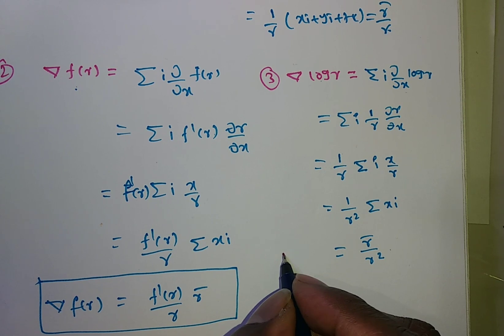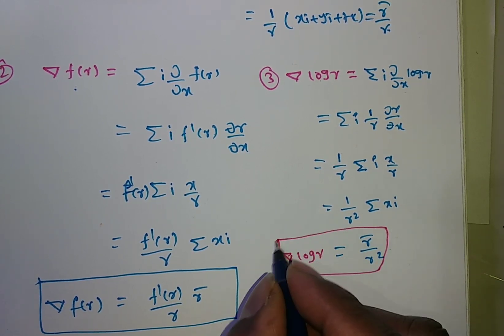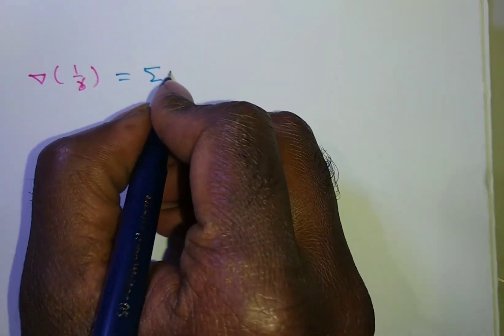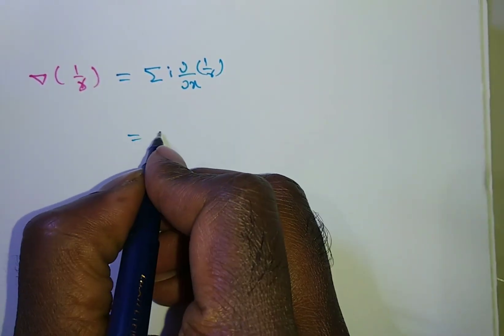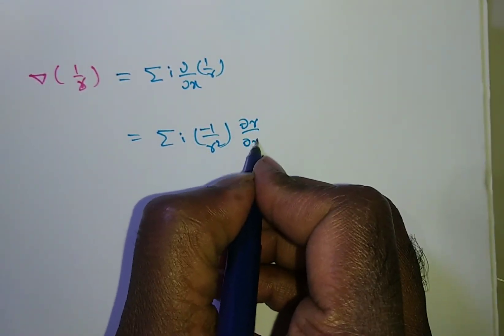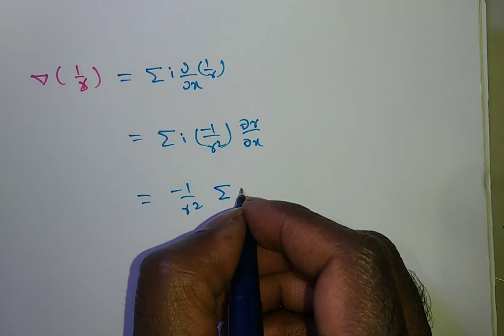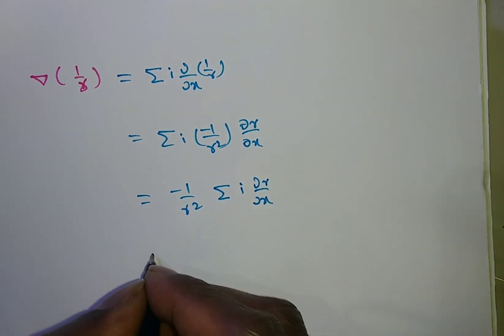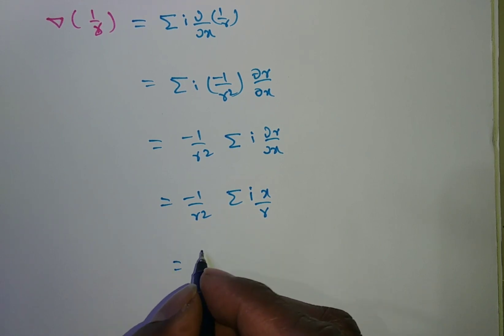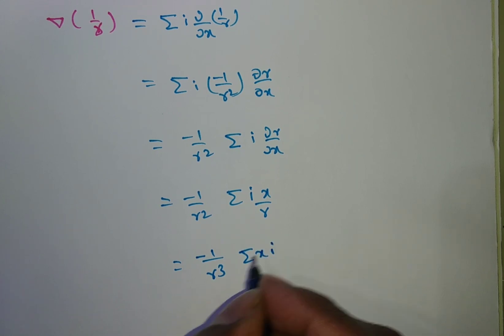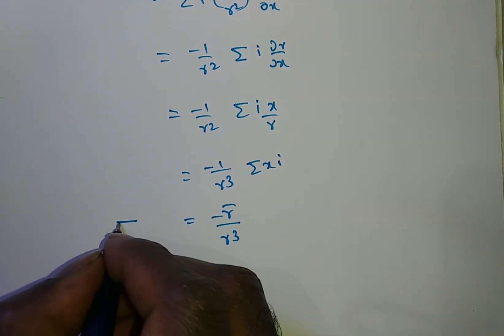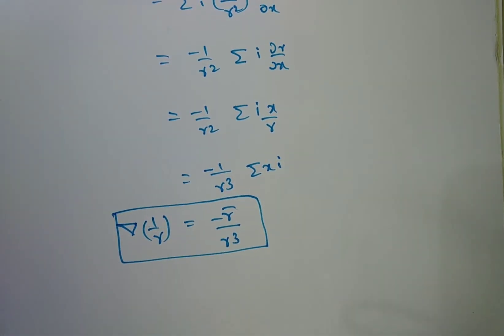Remember this formula — sometimes they give it in exams as an objective. Next: del(1/r) = Σi · (∂/∂x)(1/r) = Σi · (-1/r²) · (∂r/∂x). Taking -1/r² outside, and ∂r/∂x = x/r, taking 1/r outside further gives -1/r³ · Σxi. What is Σxi? It is r̄. So del(1/r) = -r̄/r³.